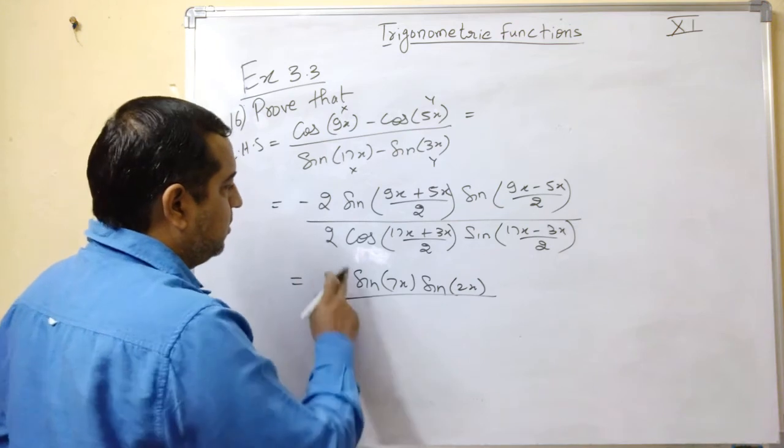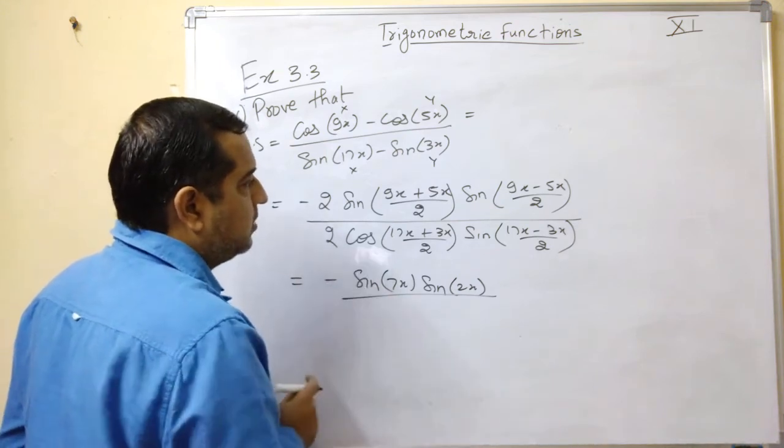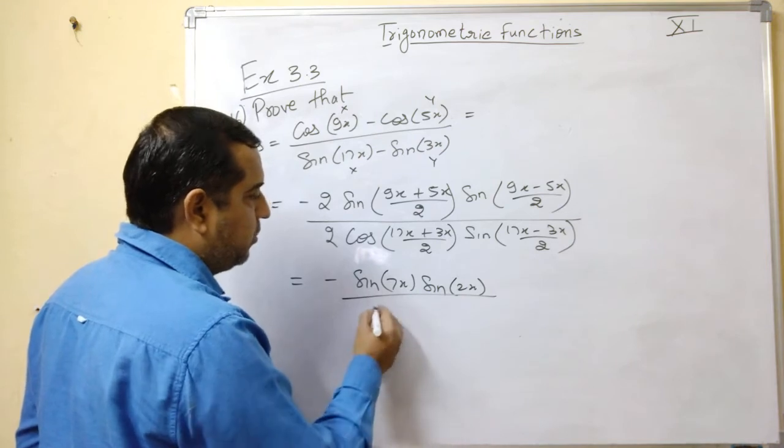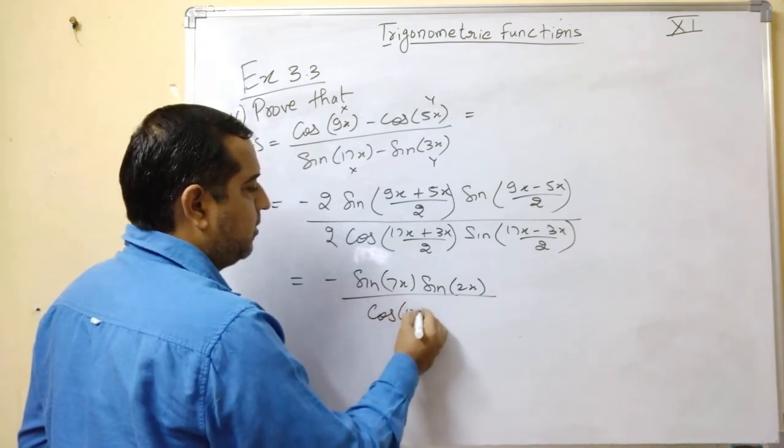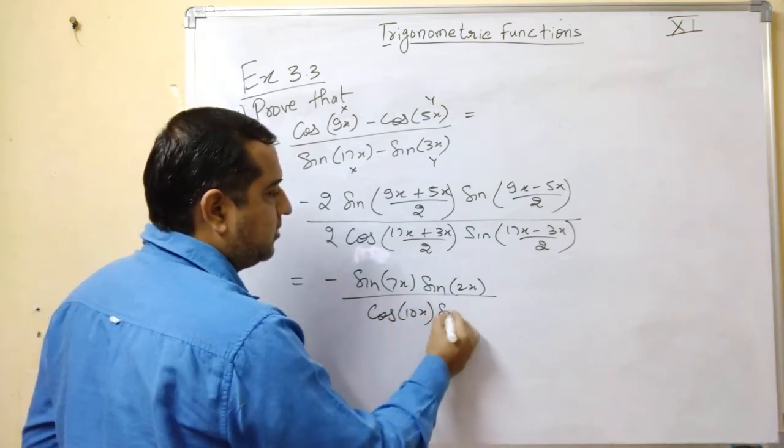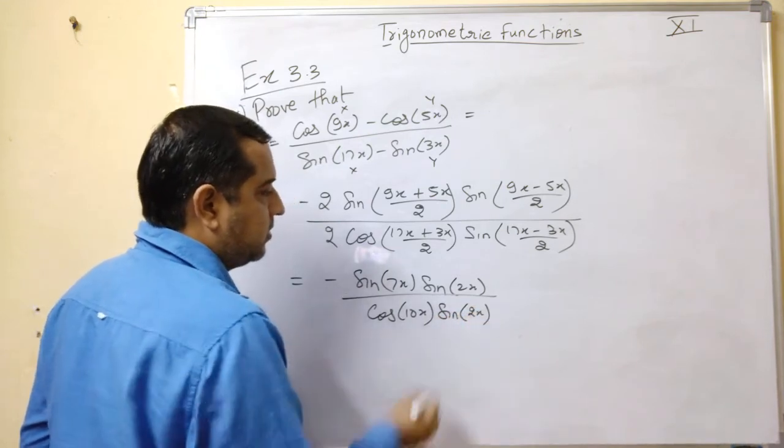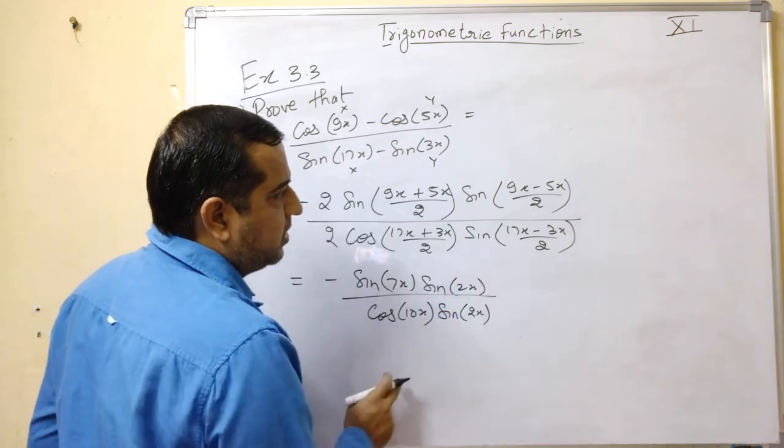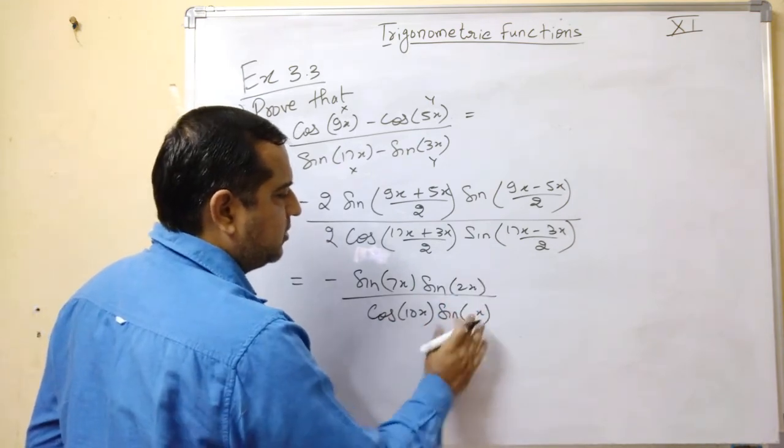And upon this you get cos of 17 plus 3. This gives you 20, and 20 divided by 2 gives you 10. And this is sin of 2x. Sorry, 17 minus 3 gives you 14, and this is 7x.